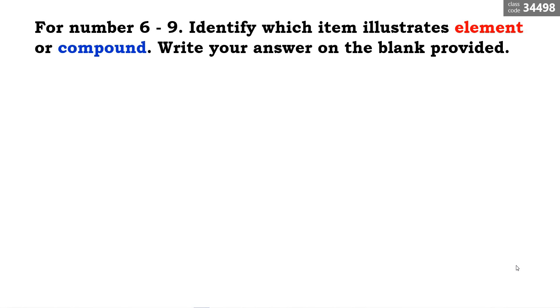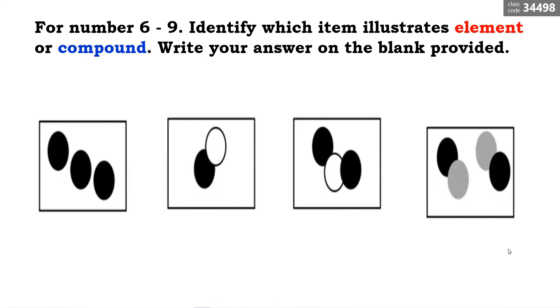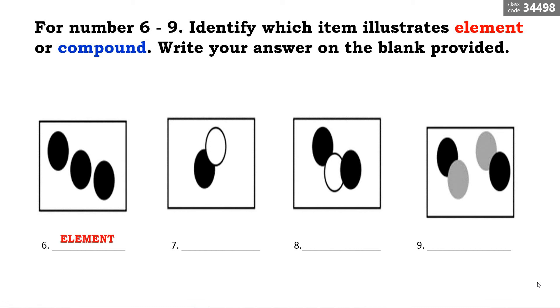Let's proceed with numbers six to nine. Let us identify which item illustrates an element or compound. Number six is an element. Number seven is also an element. Number eight is a compound. And number nine is also a compound. We're done with our review.